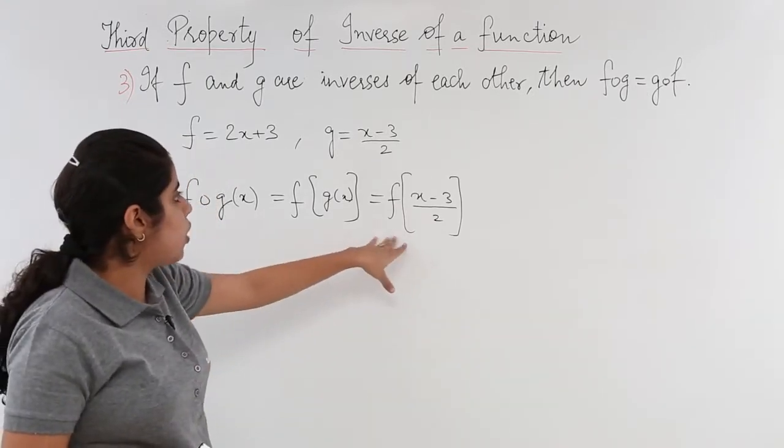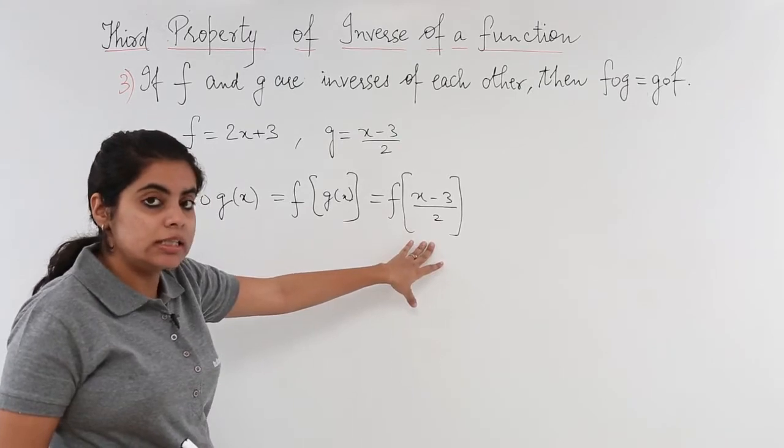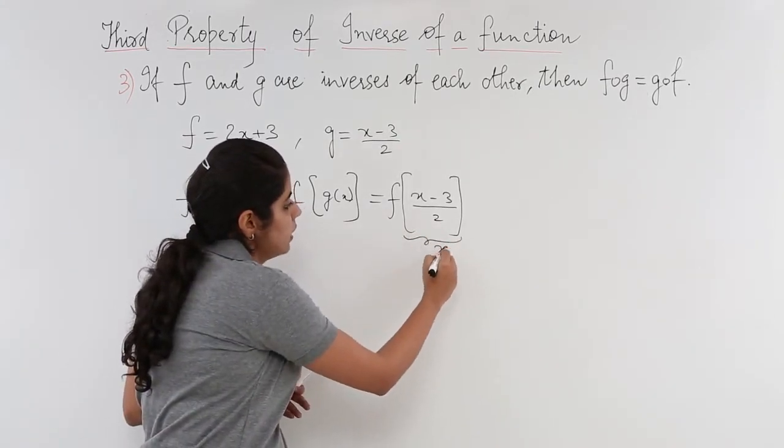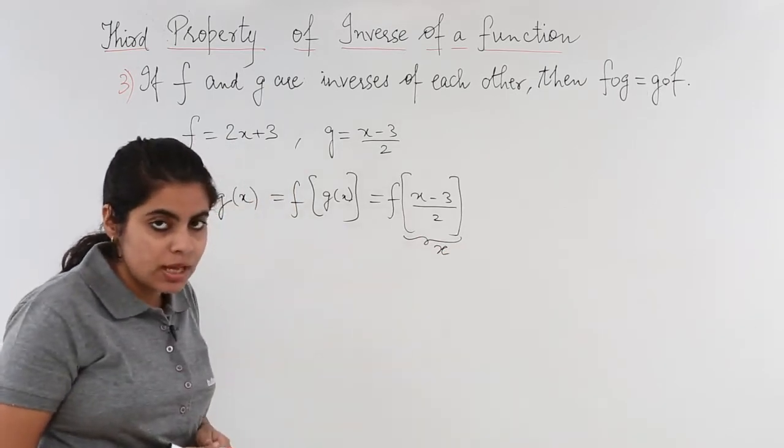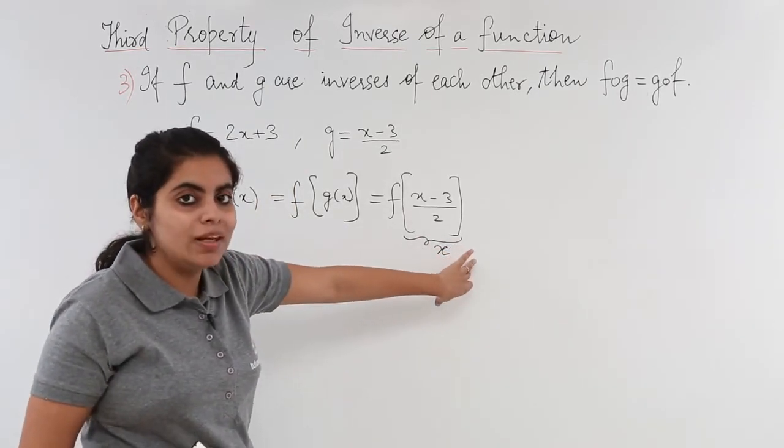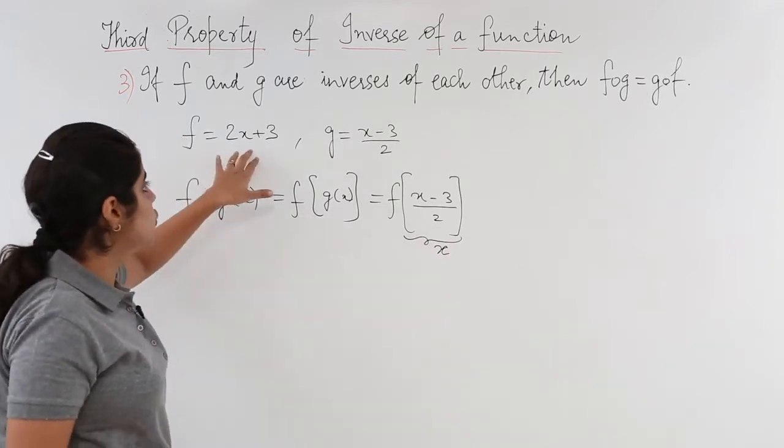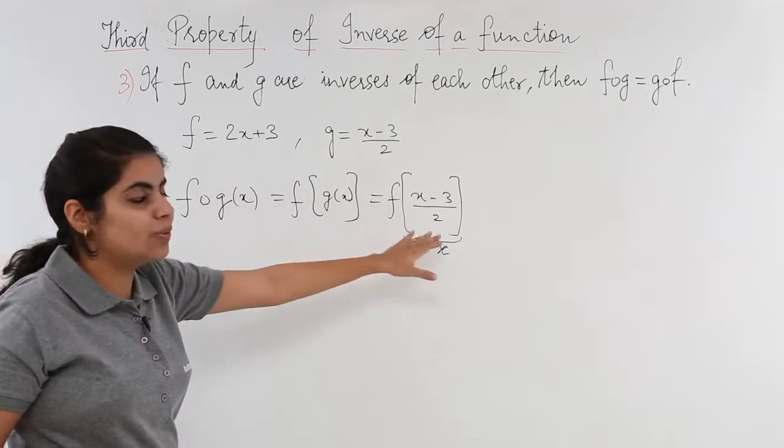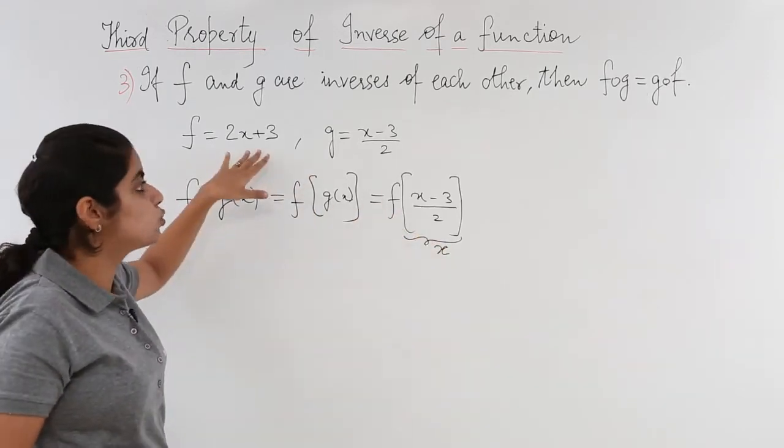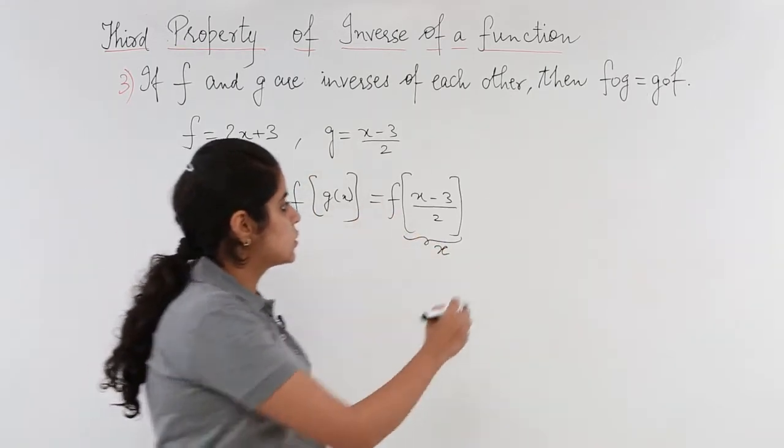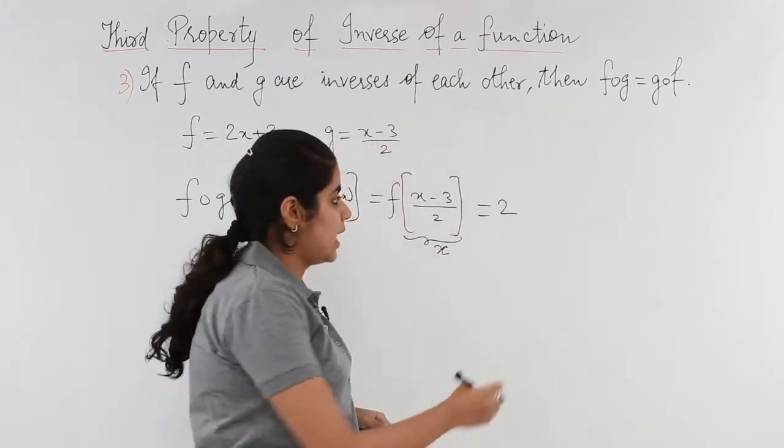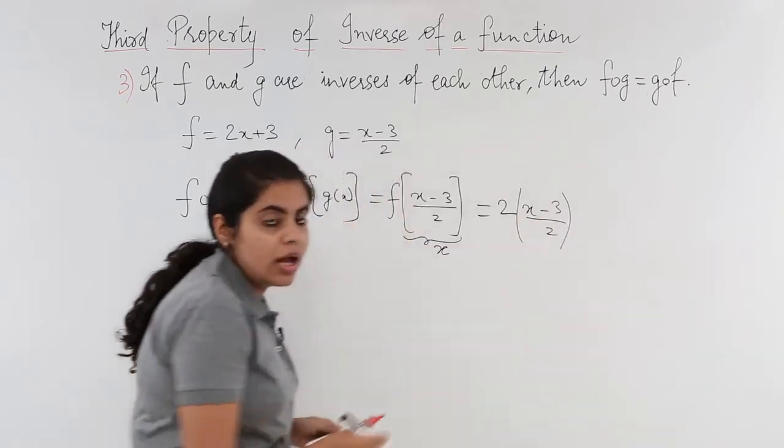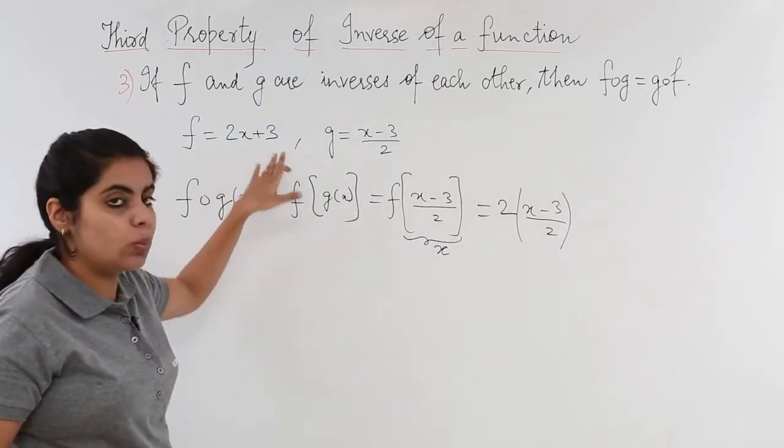Now f of x minus 3 upon 2 means what? This whole x minus 3 upon 2 is now something called as x and this whole value will be substituted into this expression of fx. So what do I do? I just substitute x minus 3 upon 2 into 2x plus 3. So 2 into x, x will become my x minus 3 upon 2, and plus 3 will come again.